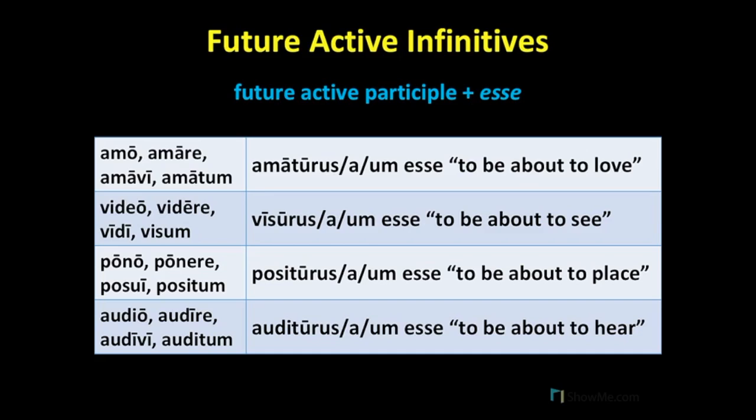To translate these, we'll use something very literal. We'll translate esse as 'to be,' and then the future active participle as 'about to blank.' So our translations are: to be about to love, to be about to see, to be about to place, and to be about to hear.